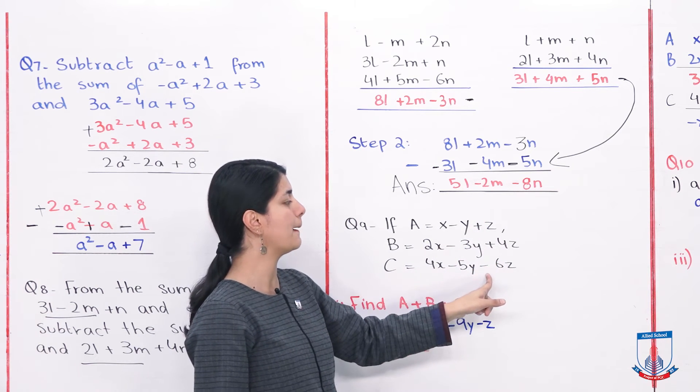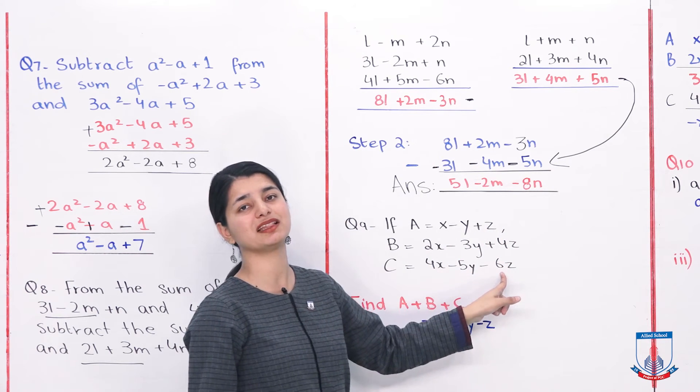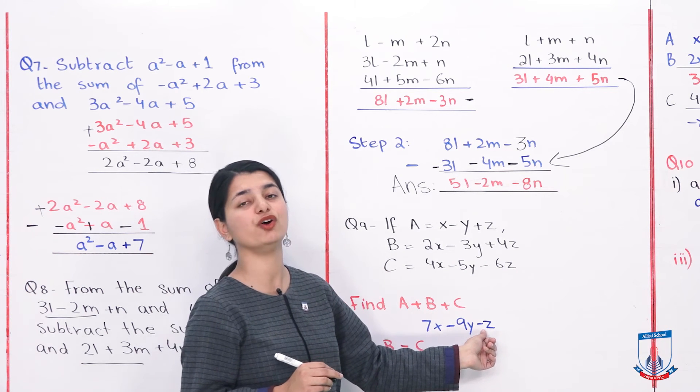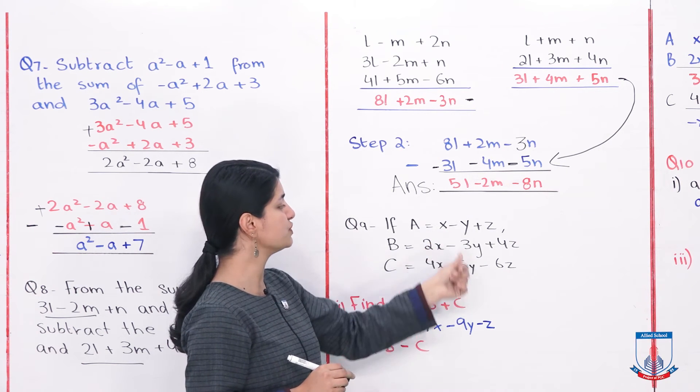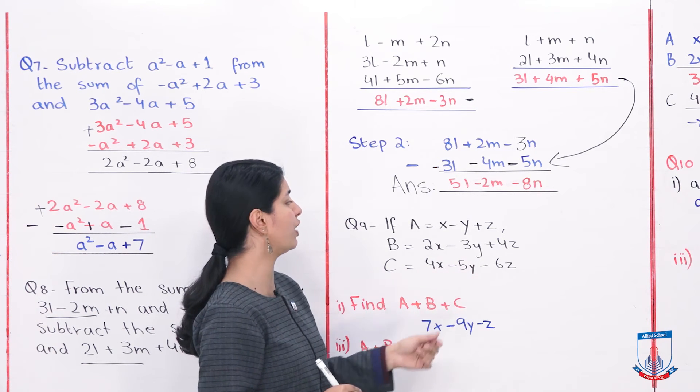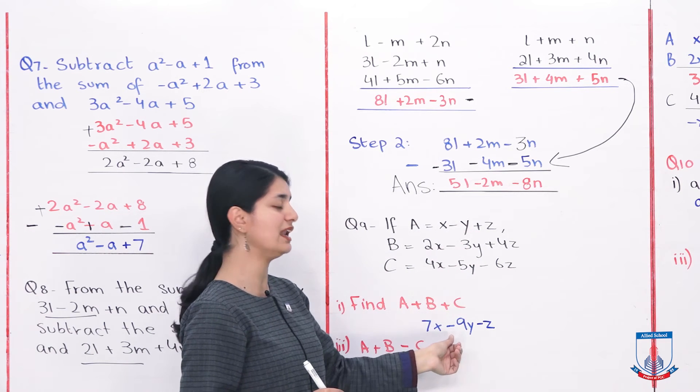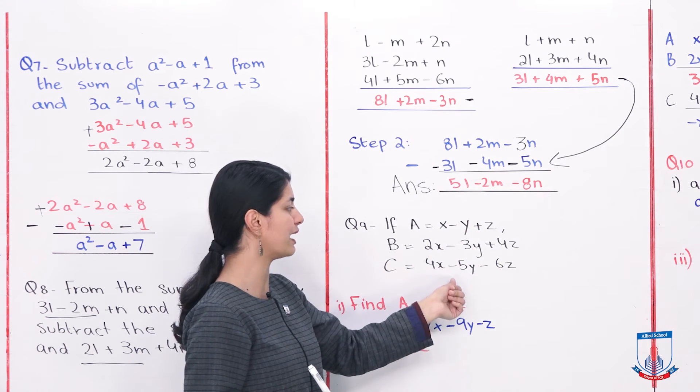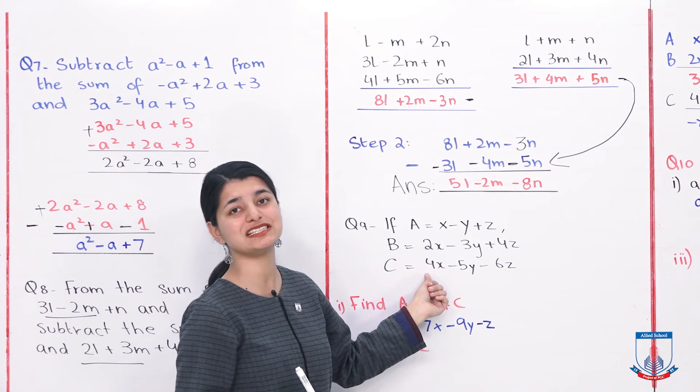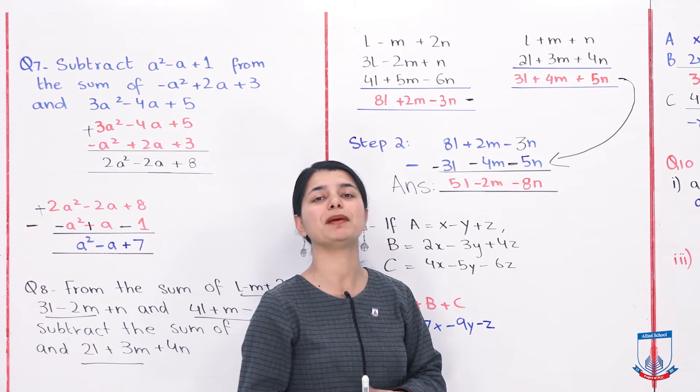To add all three, plus Z, plus 4Z, minus 6Z, these become 5, 5Z minus 6Z means 1 will remain minus from them, and then we'll have minus Z overhead. Minus Y, minus 3Y, minus 5Y, sign is same, all three will add. 5, 3, 8, 9Y, but the sign will remain negative, because all three have the minus sign with them. And here all three X, 2X, 4X, all three are positive, just add them and you will get 7X. So by adding all three, we have done the first part.